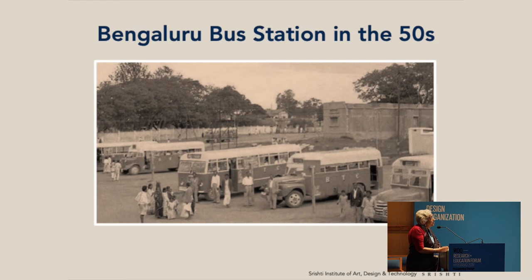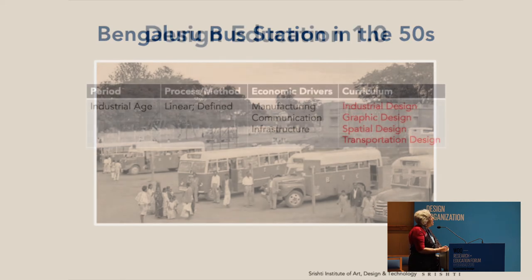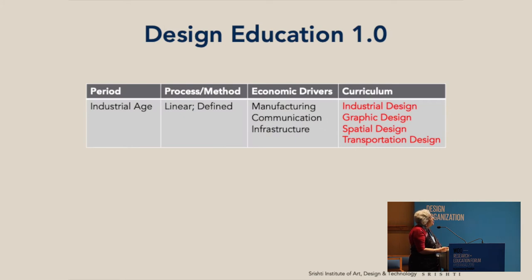We designed transportation systems, we designed buses, railway coaches, we built factories. When we had Education 1.0, it was linear, it was defined, it focused on manufacturing, communication, and infrastructure. In the curriculum of design we had industrial design, products, craft, textiles, graphic design, spatial design for our cities, and transportation design.